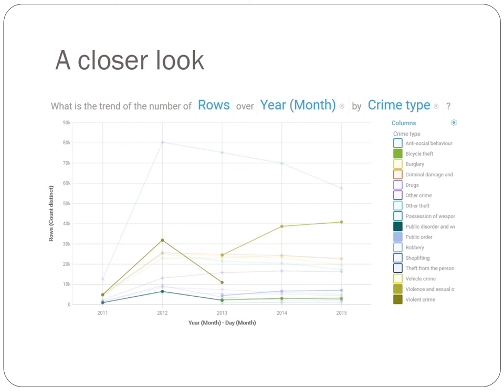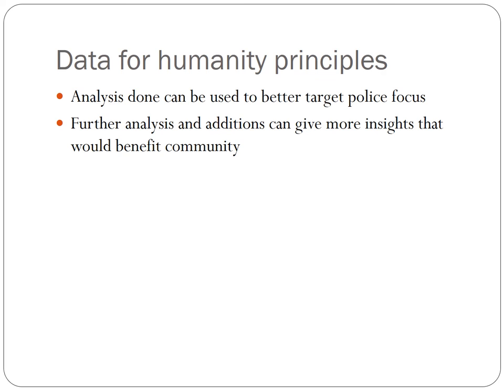Now let's move on to the final bit, which is the data for humanity principles. The analysis performed can be used to better target police focus, especially regarding violence and sexual assaults. If those are indeed on the rise, then police focus may need to be redirected for the betterment of humanity. Further analysis can be done to give more insights that would benefit the community and humanity as a whole, by creating mashups of different statistics and asking particular questions of particular data sets.